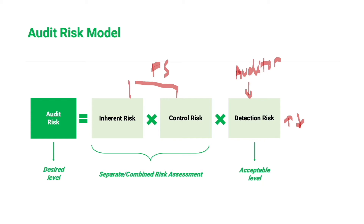Detection risk and thus overall audit risk is normally reduced when we assign more skilled personnel, increase our audit procedures, or perform more reliable audit tests compared to less reliable ones like analytical procedures. To decrease the overall audit risk, we need to decrease the acceptable detection risk. Conversely, if we allow audit risk to increase, we can also increase the acceptable detection risk.